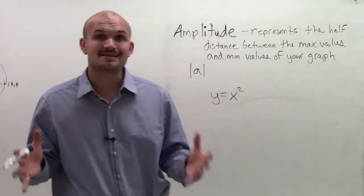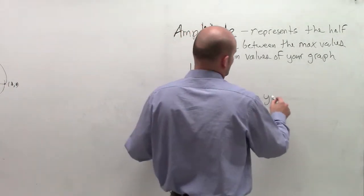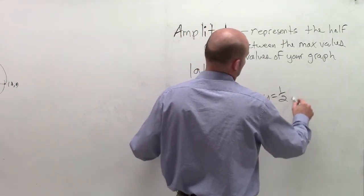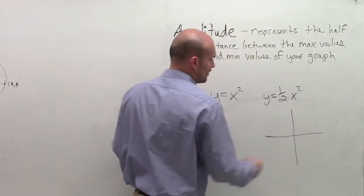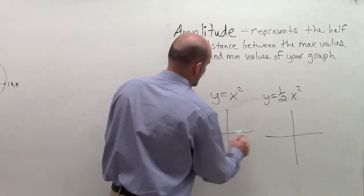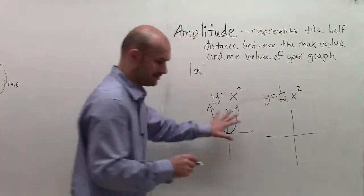Now remember, there's a lot of things that happened when we multiplied x squared by a factor, right? When I said y equals one half x squared, well, what that did was when we looked at our graph, so here's x squared. x squared has some kind of pattern similar to that.